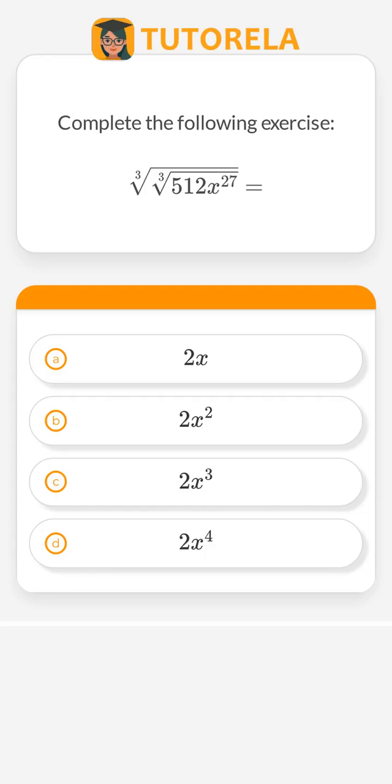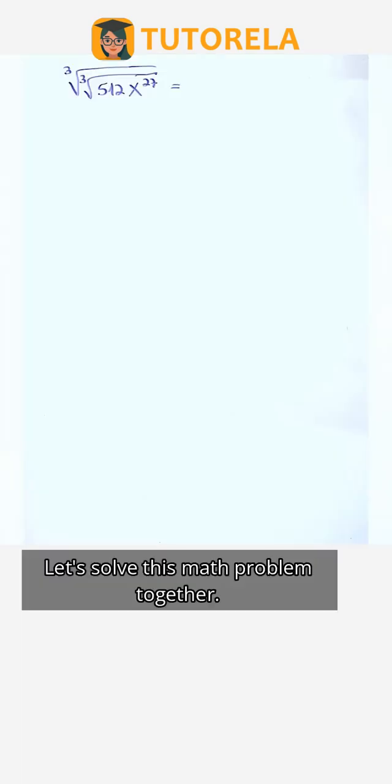Complete the following exercise: the cube root of the cube root of the quantity 512 multiplied by x to the 27th power equals what? Let's solve this math problem together.